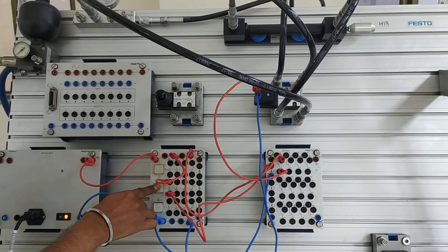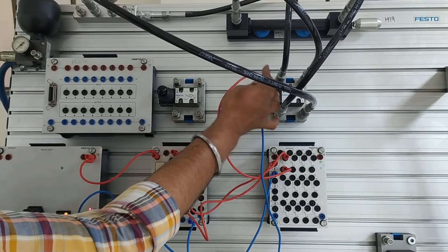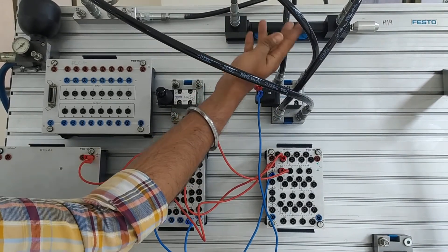When the push button is pressed, the relay coil is energized and the solenoid is also energized, and the piston starts moving in the forward position.